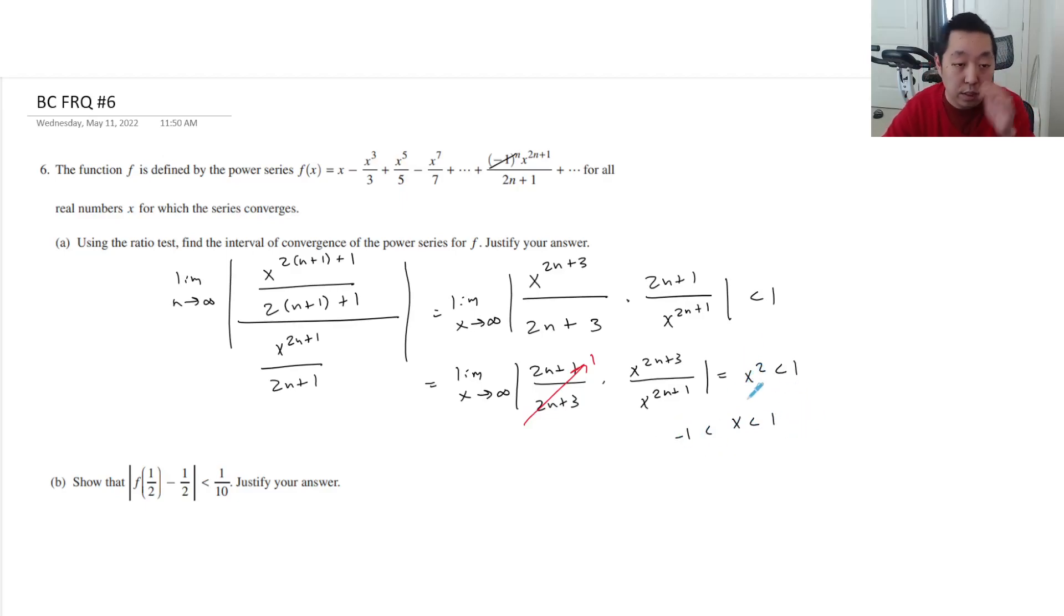Okay, so that's the interval. We should check the endpoints because they want the interval of convergence. We need to check the endpoints when we're finding intervals. So we need to check when x is equal to 1. When it's equal to 1, what does the series look like? It's just 1 to the 2n plus 1 is just 1. It's negative 1 to the n over 2n plus 1. This is going to be from 0 to infinity. And this one converges by the alternating series test. That's because if you do the limit of 1 over 2n plus 1 as n goes to infinity, that equals 0.